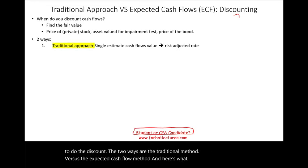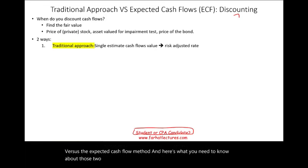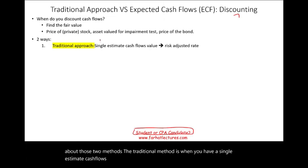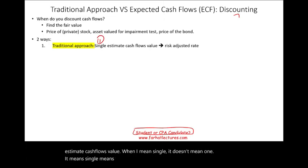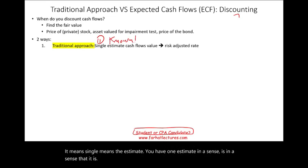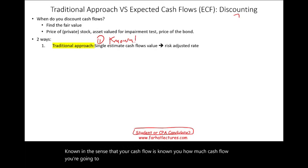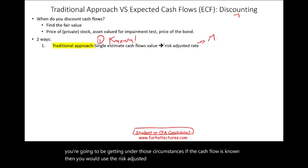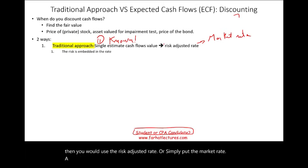Here's what you need to know about those two methods. The traditional method is when you have a single estimate of cash flows. When I say 'single,' it doesn't mean one — it means the estimate is known in a sense that your cash flow is known. You know how much cash flow you're going to receive. Under those circumstances, if the cash flow is known, you would use the risk-adjusted rate, or simply put, the market rate. A good example of this is bonds.